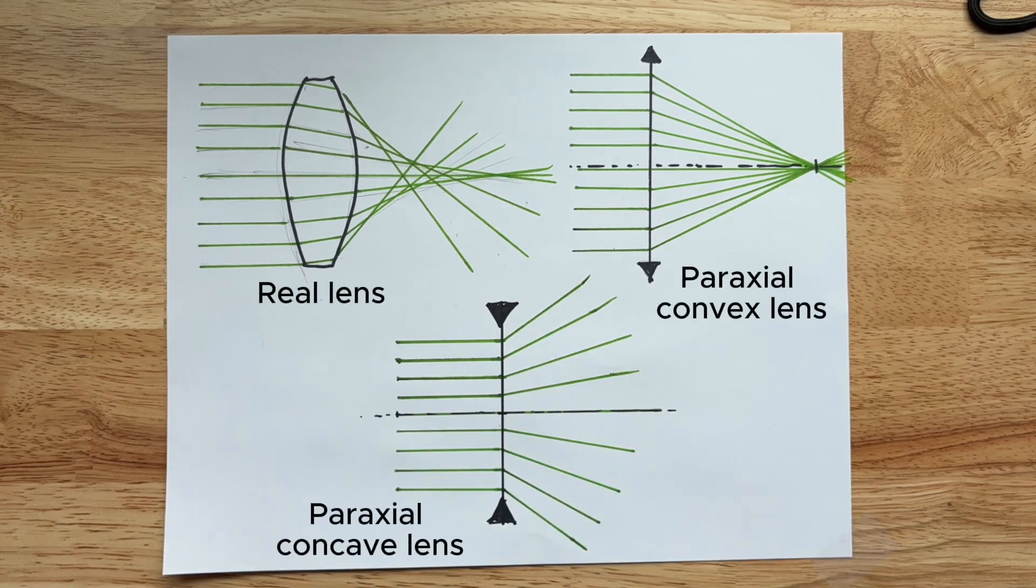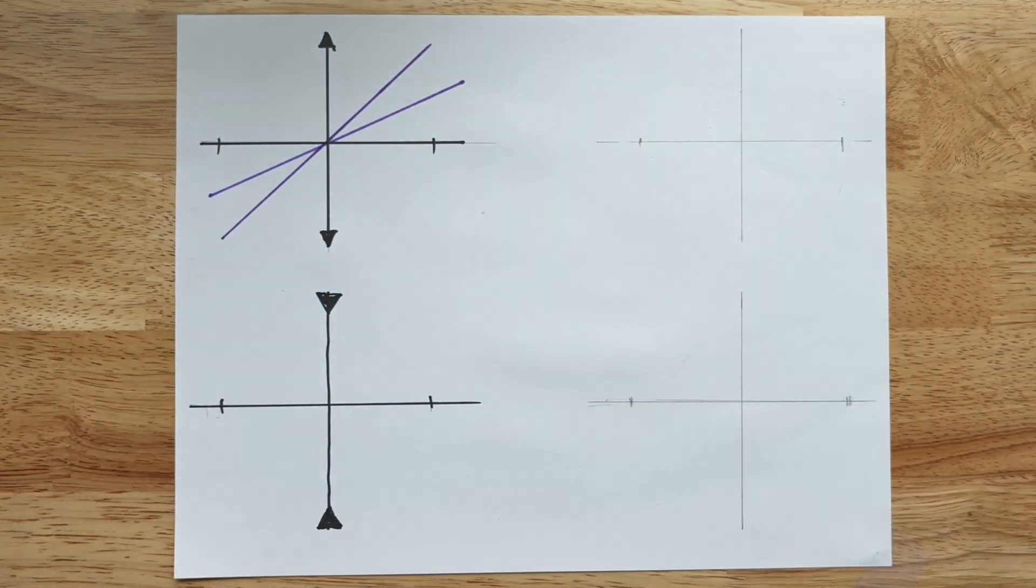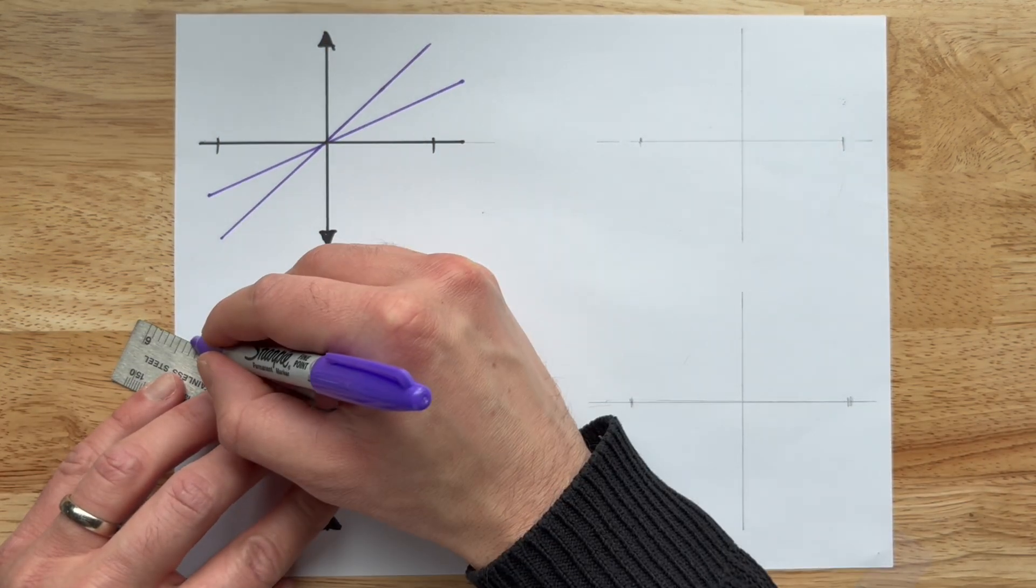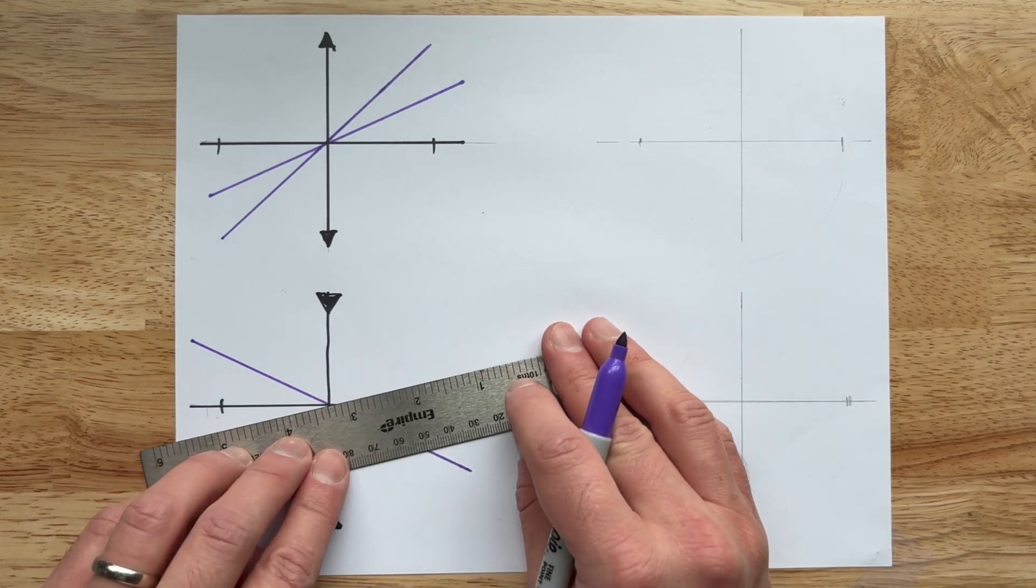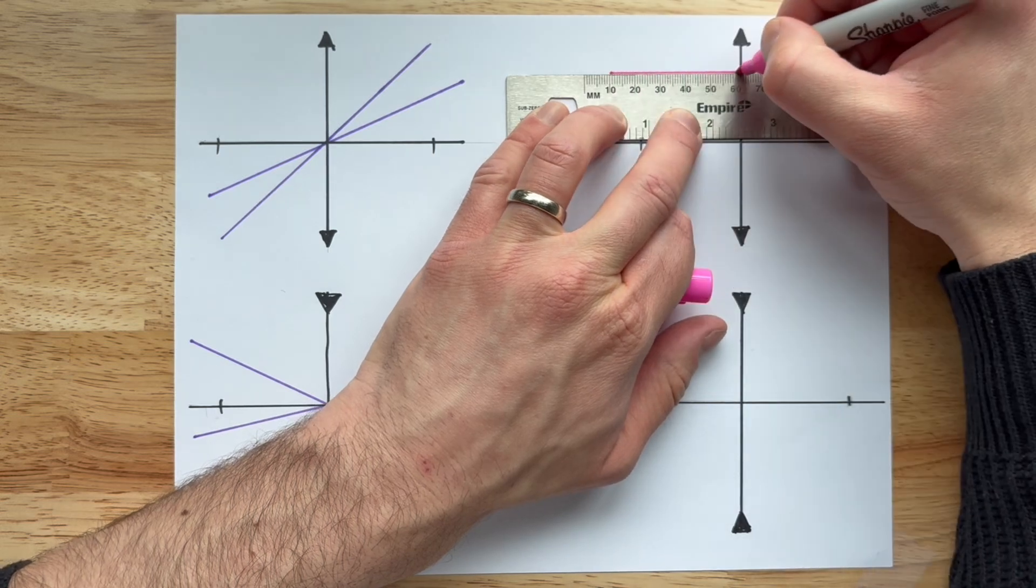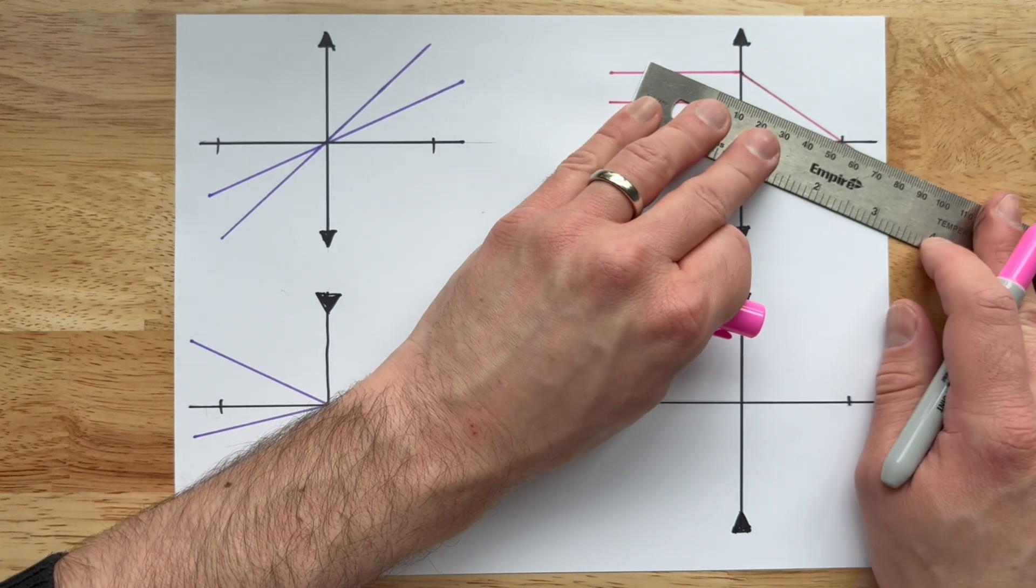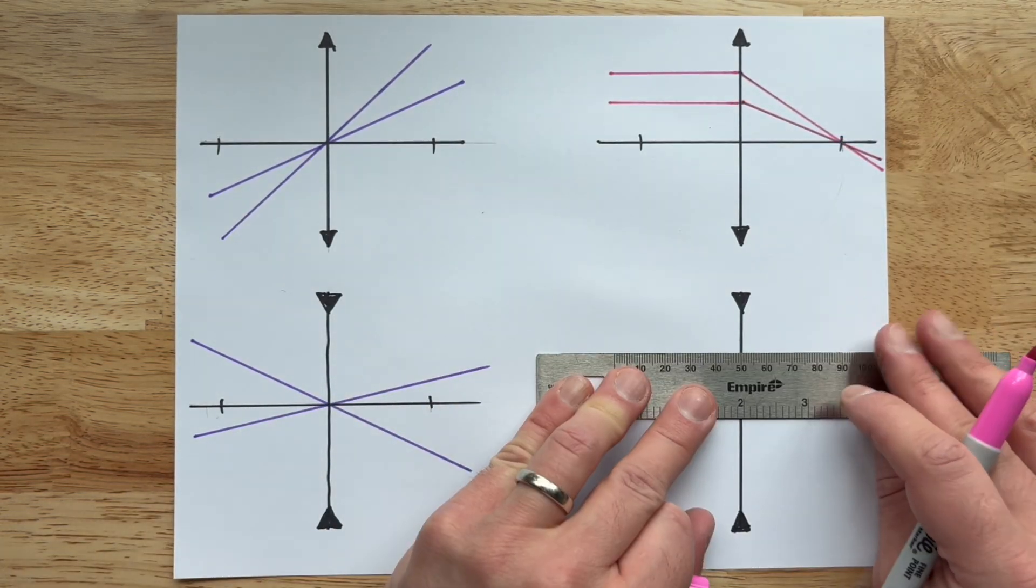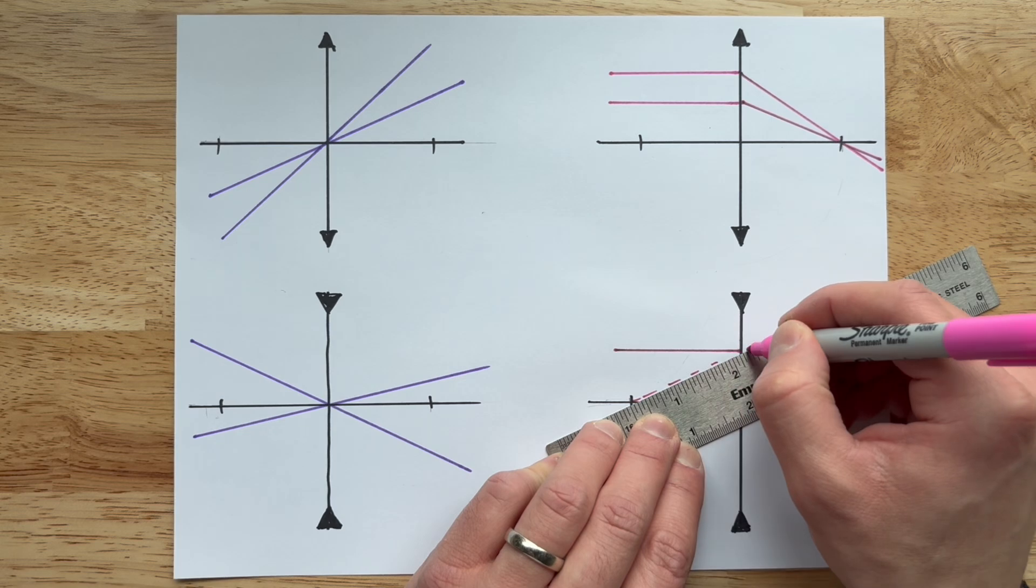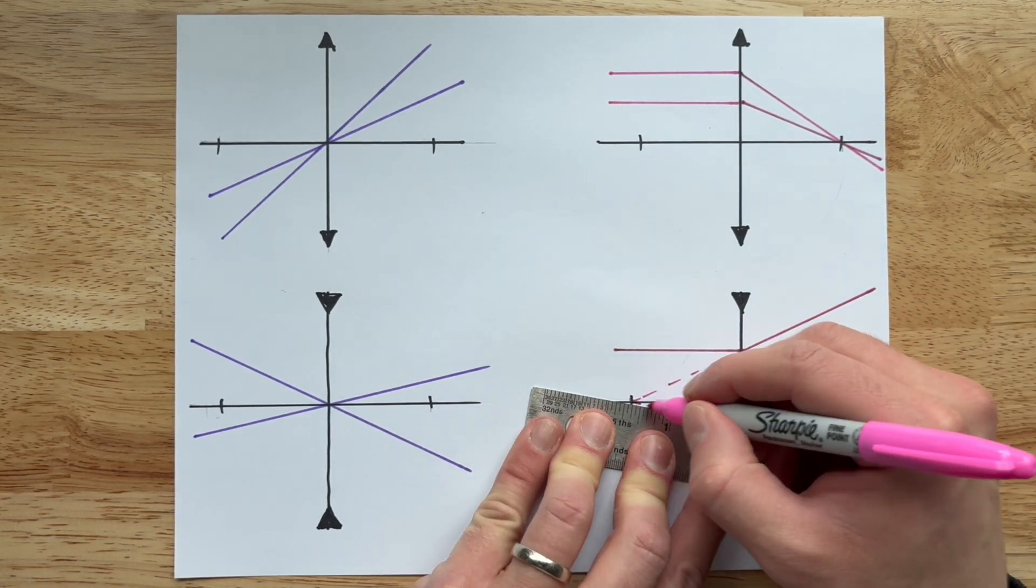Convex lenses are symbolized with arrows pointing upwards, and concave lenses are symbolized with arrows pointing inwards. You can get pretty far with only two rules for drawing rays with paraxial lenses. One, when a ray passes through the center of a lens, it passes through unaltered. Two, rays parallel to the optical axis pass through the optical axis at a distance equal to the focal length. For convex lenses, the ray crosses the optical axis on the other side of the lens. For concave lenses, an imaginary line is drawn on the side of the lens where the rays originated.